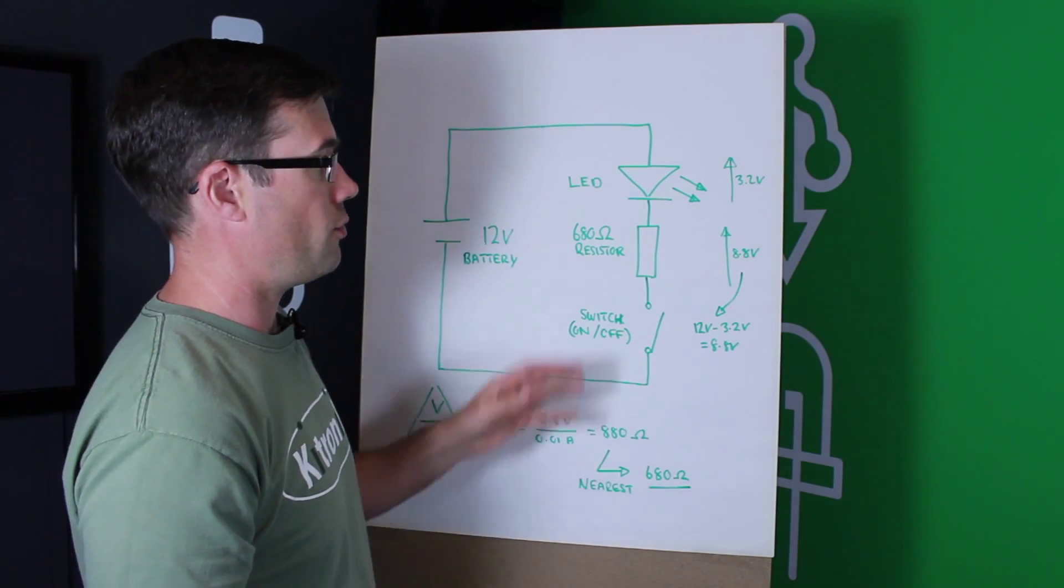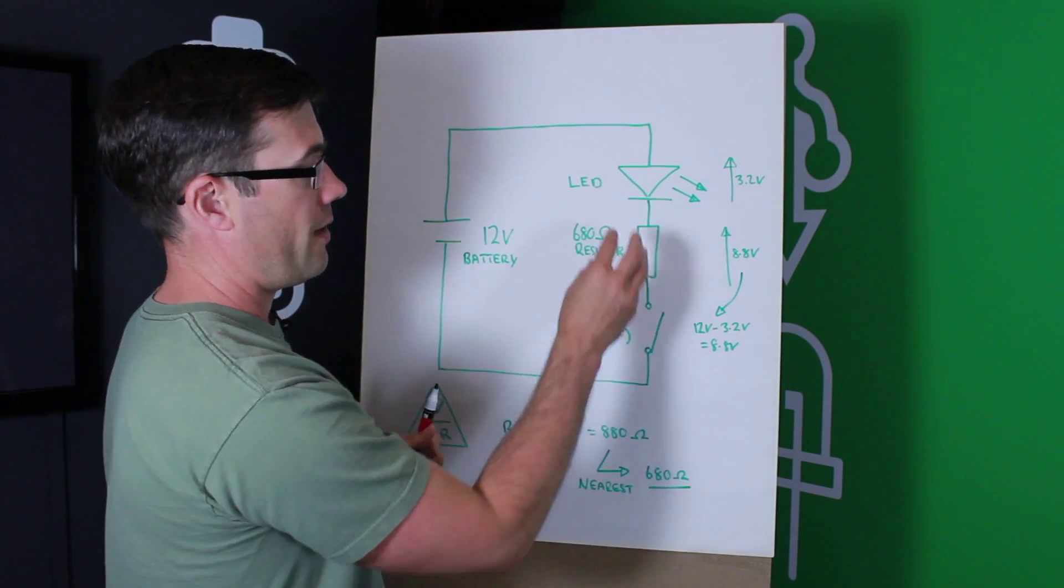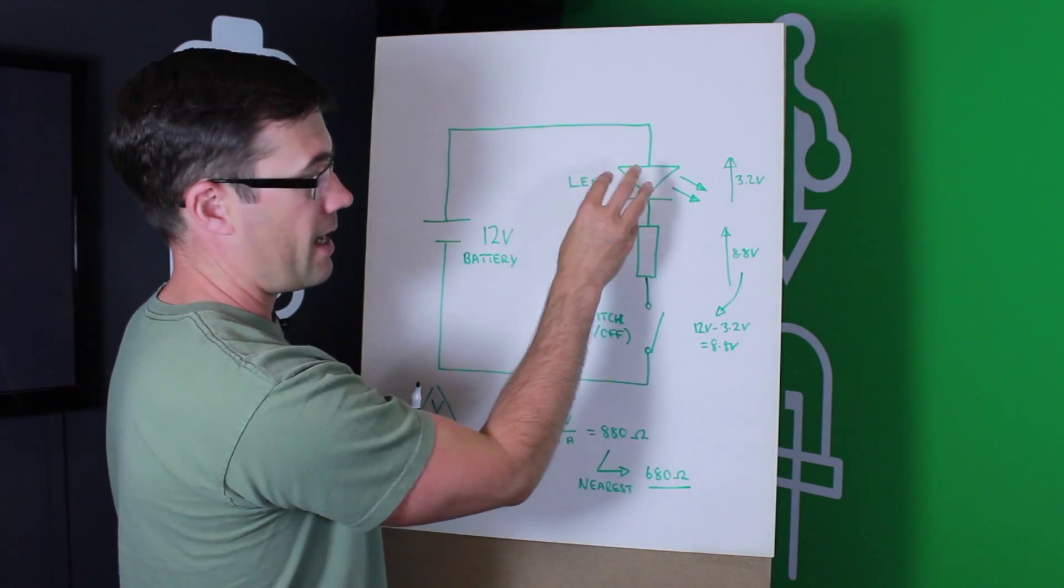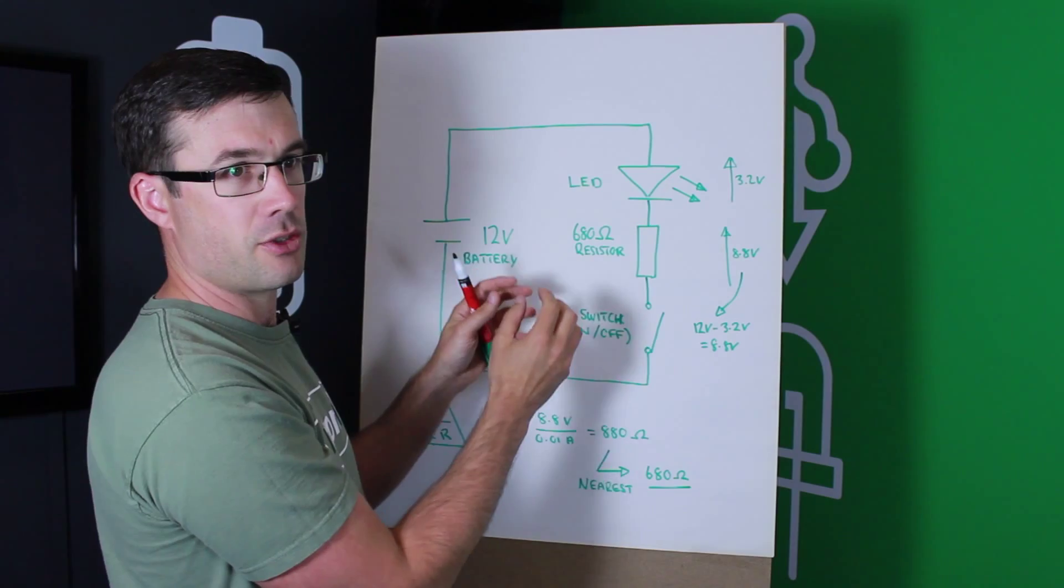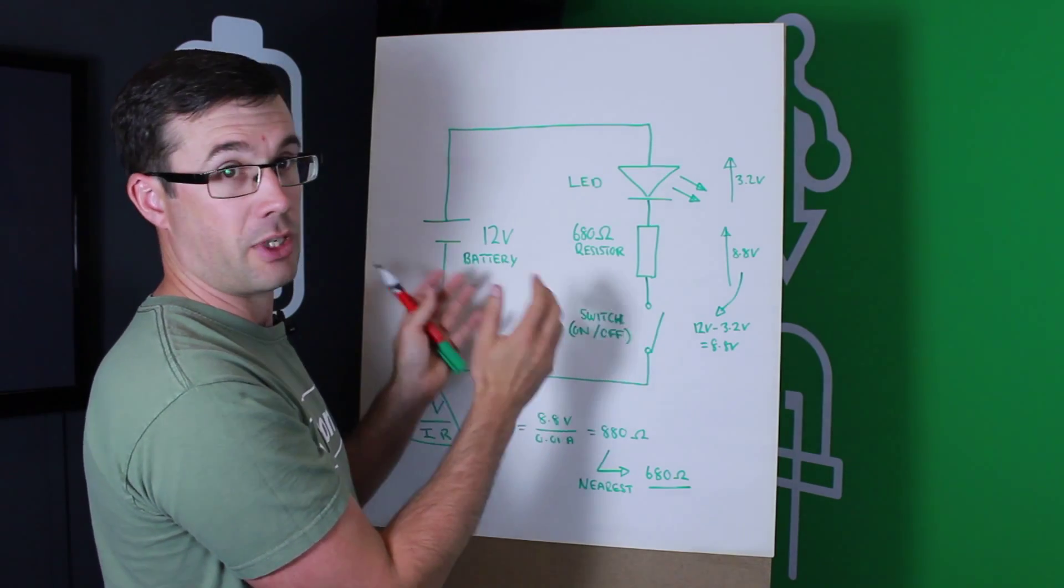So, what we have to do is use a resistor to make sure that we have the correct voltage across that LED, and also the right amount of current or power flowing through it, so that it stays nice and bright, but doesn't become damaged.